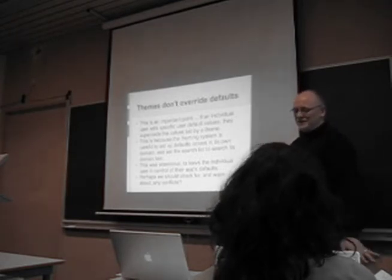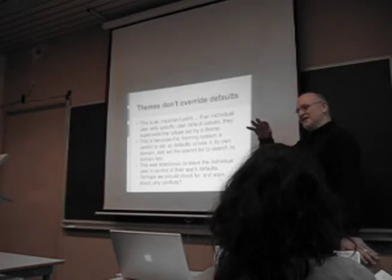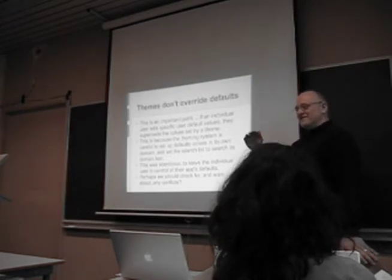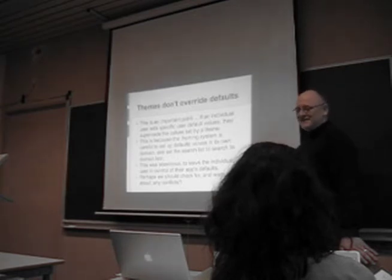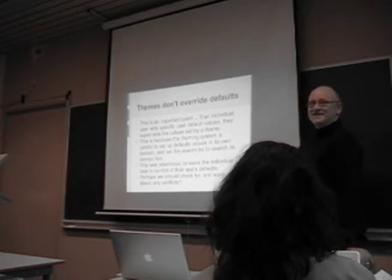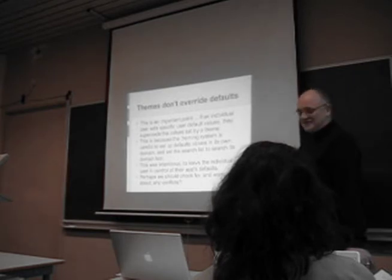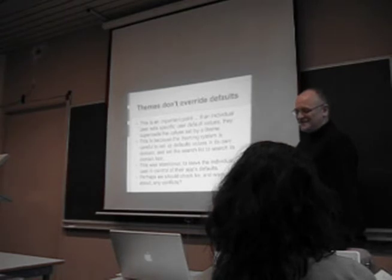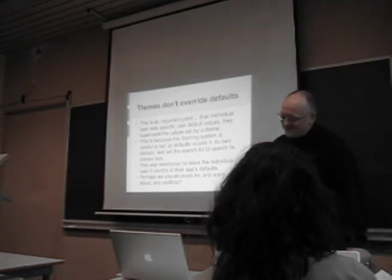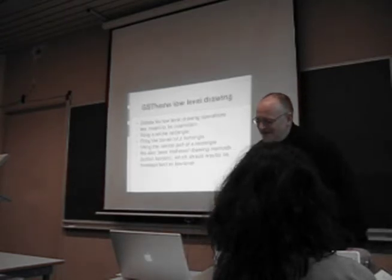I don't know if everyone's familiar with the default system, but basically you have different domains that you set defaults in. And you have a list of domains, and when you want to look up the value of a default, it goes down the list, finds the first match. So the matches produced by the themes are always the last matches, and someone else can tweak things by setting individual defaults. I don't know if that's the right decision, but that's the way it works at the moment.